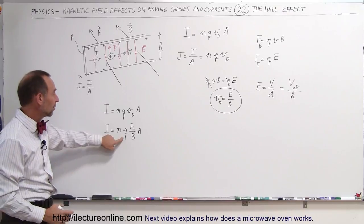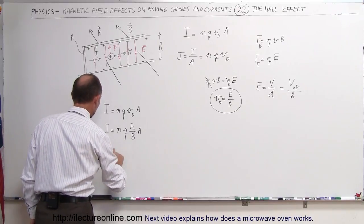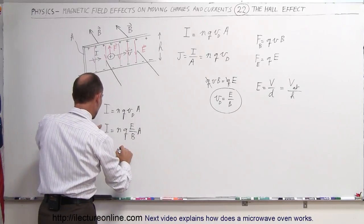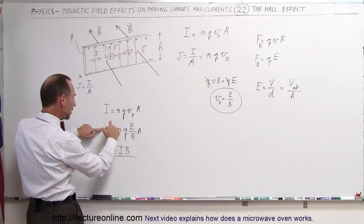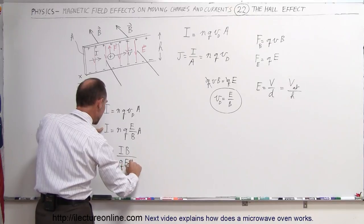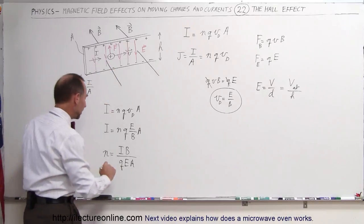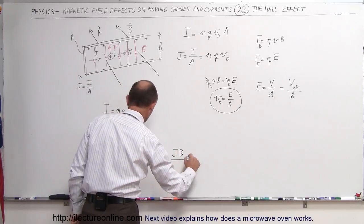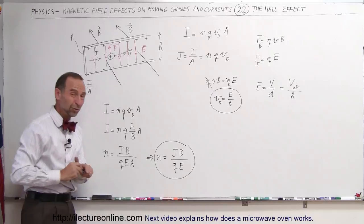We can assume the charge to be a single unitary charge and measure the cross-sectional area. Therefore, we can solve for N — the number of charges per unit volume — which equals I times B divided by N, Q, E, and A. Since the current density J equals I divided by A, we can express N as the current density times the magnetic field, divided by the size of each charge times the electric field. That's how Hall determined the charge density.